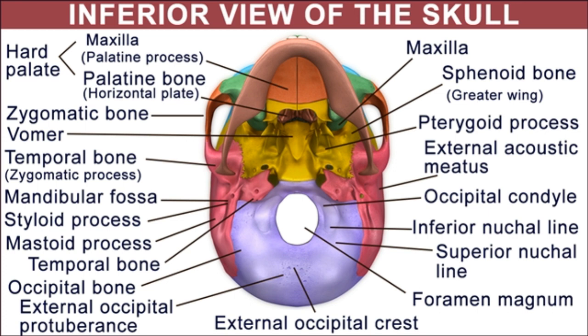At birth, the aforementioned parts develop separately and are joined by cartilage, forming a ring around the large opening called the foramen magnum. It is only around the age of six years that these four parts unite to form a single bone. The squamous section, which is formed by a convex posterior superior plate behind the foramen magnum, makes up the major part of the occipital bone.